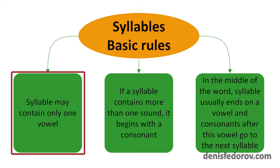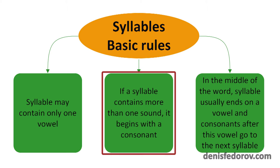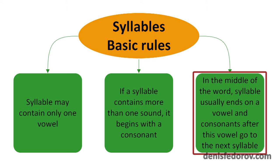OK, here are the basic rules. Syllable may contain only one vowel. If a syllable contains more than one sound, it begins with a consonant. In the middle of the word a syllable usually ends on a vowel and consonants after these vowels go to the next syllable. Let's learn these rules in details and with examples.